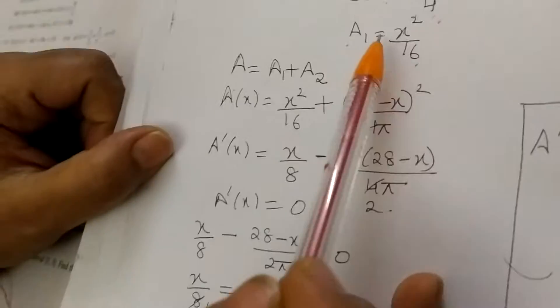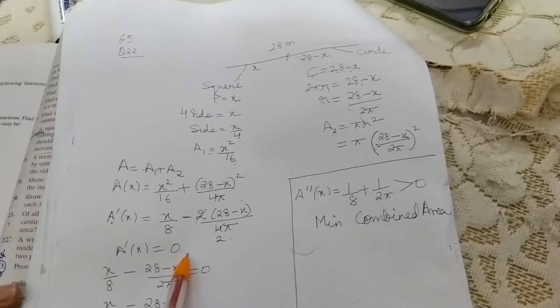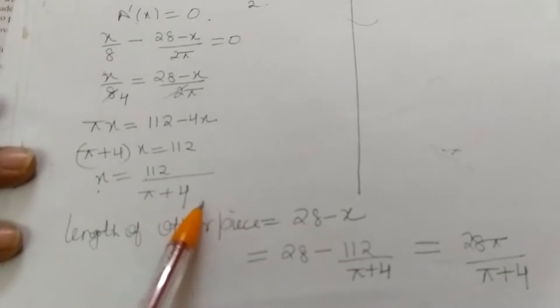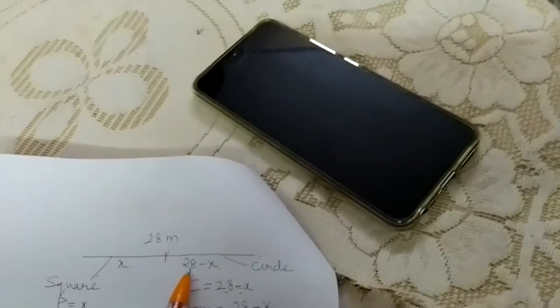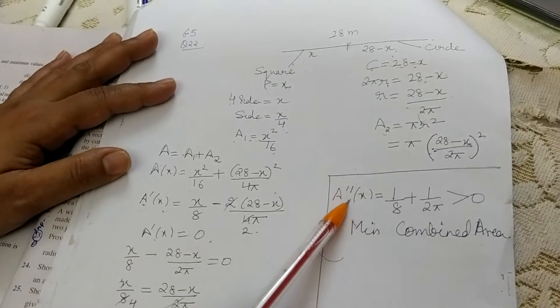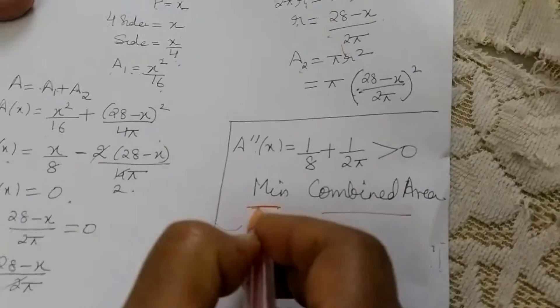Total area A = area₁ + area₂ = x²/16 + (28 − x)² / (4π). Taking the derivative and setting it equal to 0, we solve to get x = 112 / (π + 4). The length of the circle piece is 28 − x = 28π / (π + 4). The double derivative is positive, so the combined area is minimum — which is what we had to prove.